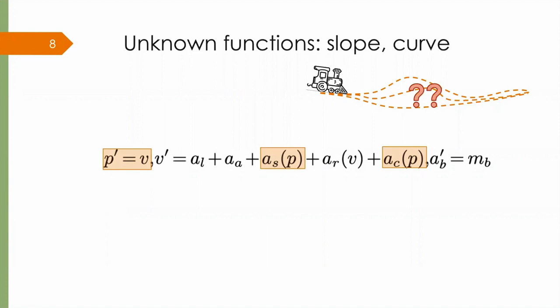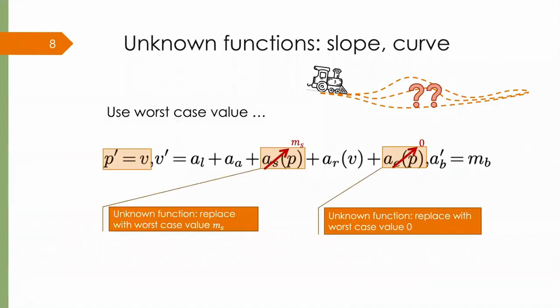Fortunately, we know the worst case bounds on slope and curve. A given railroad will know its steepest slope and sharpest bend. So we conservatively substitute in the worst case values to compute a bound on the dynamics.